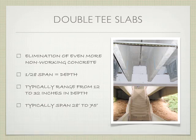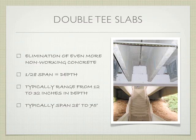Moving up in spanning capability, we get to the double-T slabs — elimination of even more non-working concrete. One twenty-eighth of the span is the depth, so these are a lot deeper, which could be problematic depending on headroom. They typically range between 12 and 32 inches in depth, and spans are going to be 28 feet to 75 feet — much, much longer spans.